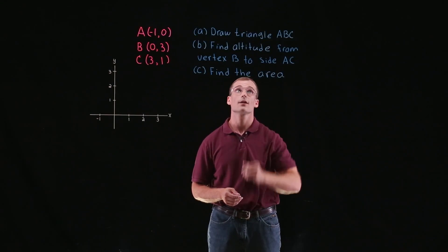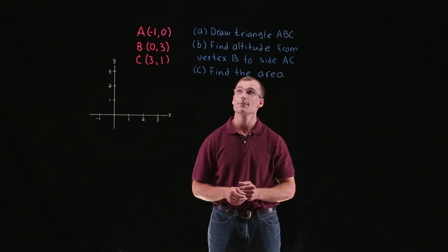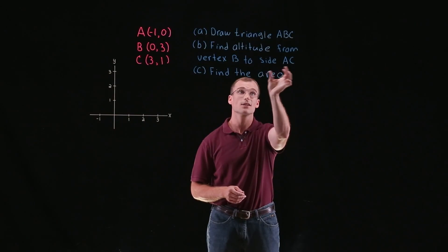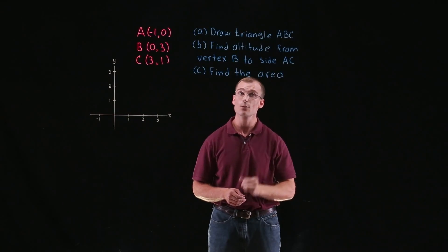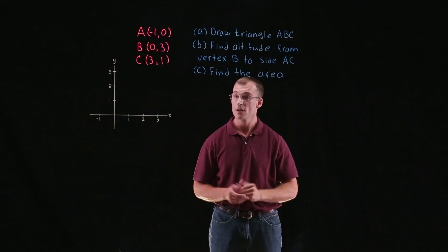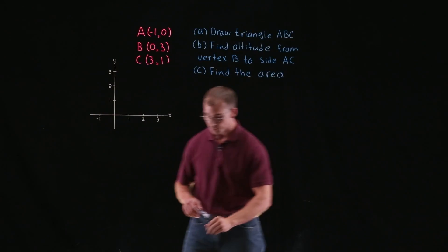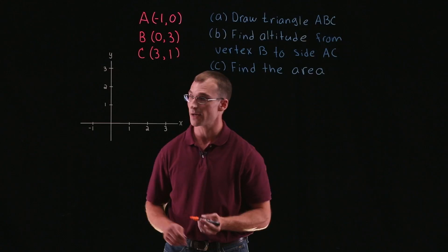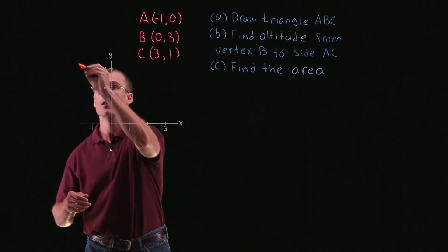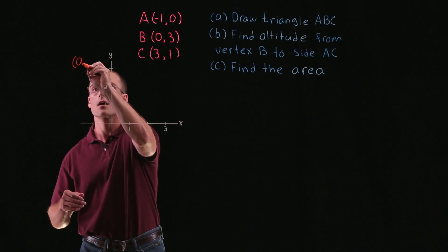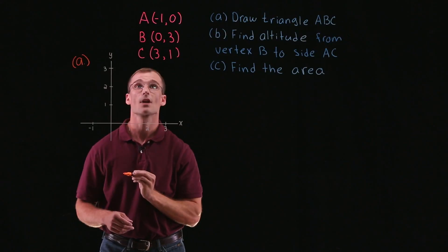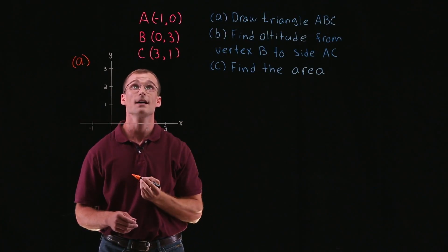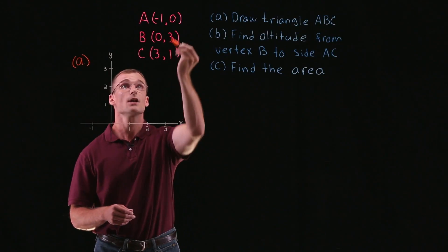For part A, we're going to draw our triangle ABC. Then for part B, we're going to find the altitude from vertex B to the side AC. And then we're going to find the area of the triangle. So let's get started with part A — we're just going to draw our triangle on the coordinate plane, sketch points A, B, and C, and connect the dots to make the sides of our triangle.